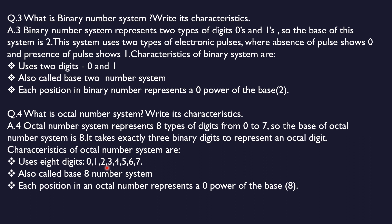The octal number system uses 8 digits: 0, 1, 2, 3, 4, 5, 6, and 7. This system is a base 8 number system. Every position in an octal number represents a power of base 8.